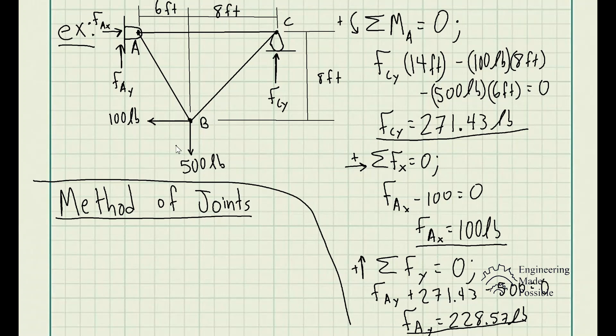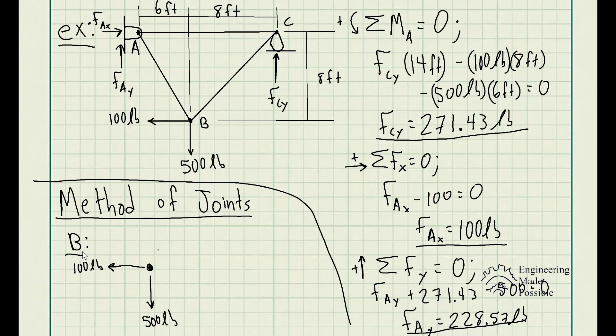Now we start the method of joints. Since the members are connected at joints A, B, and C, we choose a joint to analyze and only look at that specific point. When choosing a starting joint, it's always best to choose one that has only two unknowns. Let's go ahead and analyze joint B, drawing a free body diagram of that joint specifically.